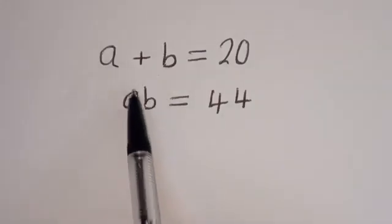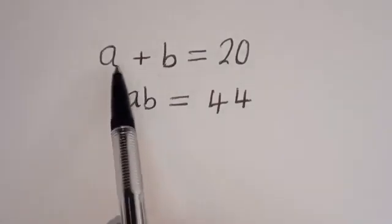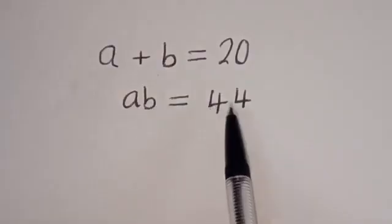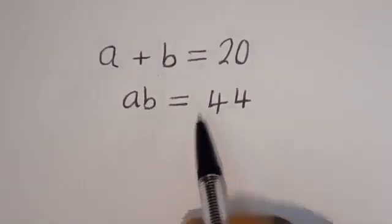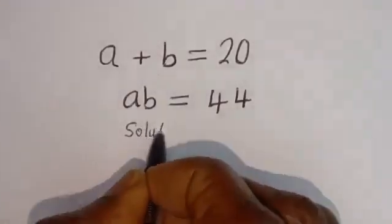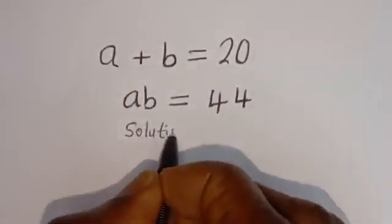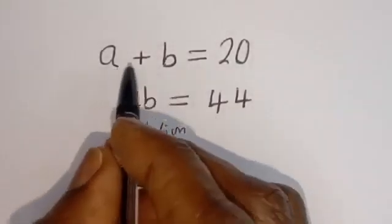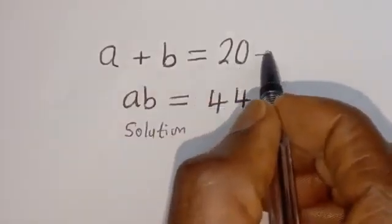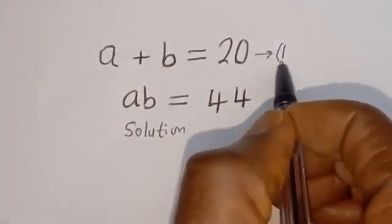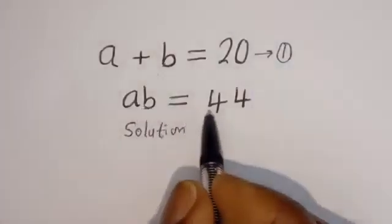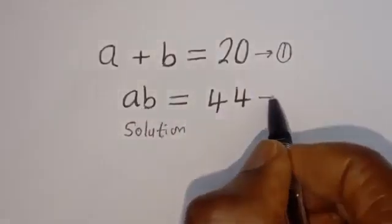Hello. How to solve for a and b in this equation: a plus b is equal to 20 — let's call this equation one — and ab is equal to 44 — let's call this equation two.